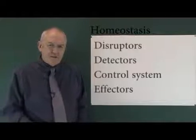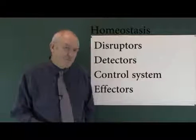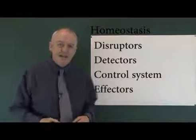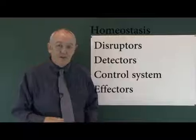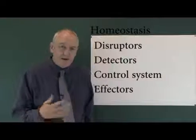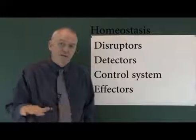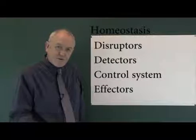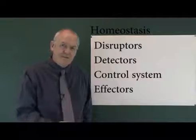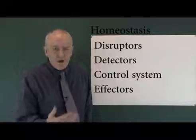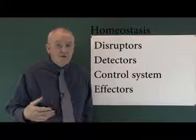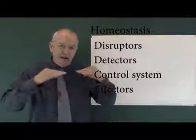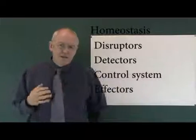There are four useful terms when we think about homeostasis. The first is disruptor. A disruptor is something that will tend to change a homeostatic parameter. So if you go running or it's a hot day, you're going to get hotter — that's going to tend to disrupt thermoregulation and temperature homeostasis.